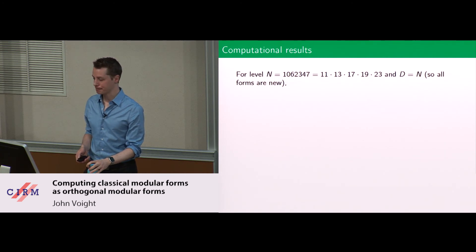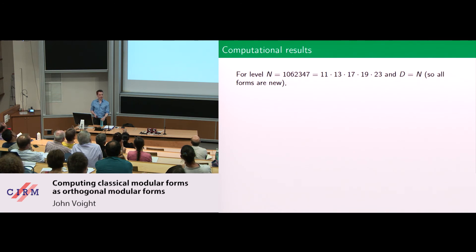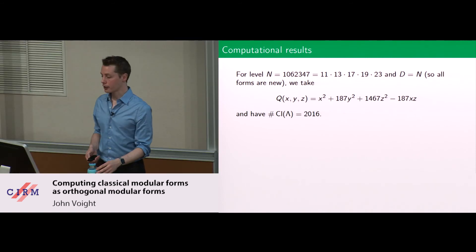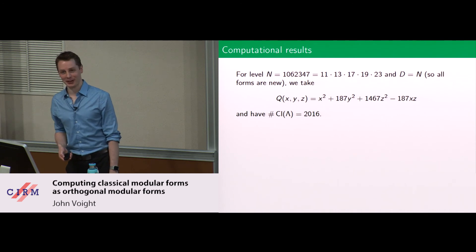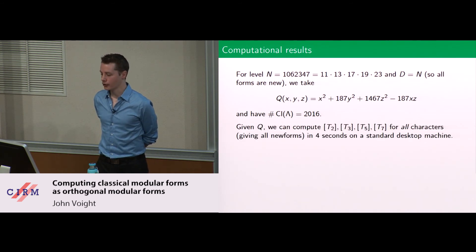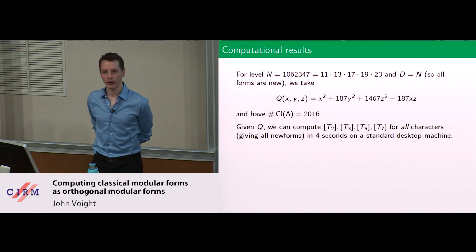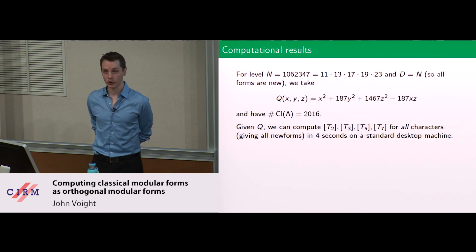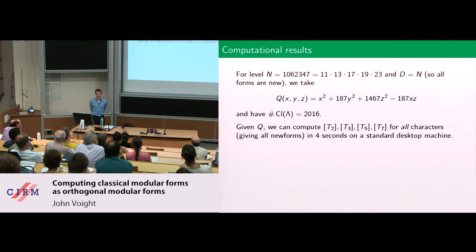Let me show you how awesome this is. Here is a level of about a million — it's square-free, has five prime divisors. To make a quaternion algebra, I have to take an even finite number of places, so I take these five primes and the one at infinity. Here is a representative from the class set — we chose this example because the number of representatives was 2016. We're already a year behind in getting this done. Given this Q, we can compute the first four Hecke operators on this 2000-dimensional space for all characters in four seconds.